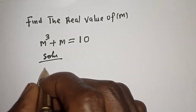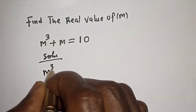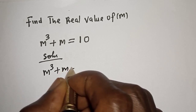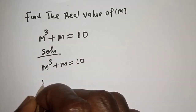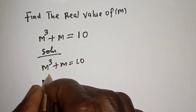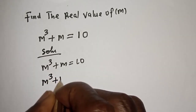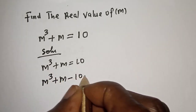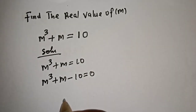The given equation is m raised to the power 3 plus m is equal to 10. Then, m raised to the power 3 plus m minus 10 is equal to 0.